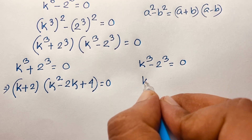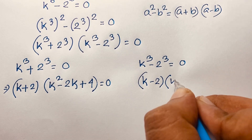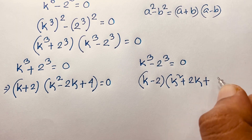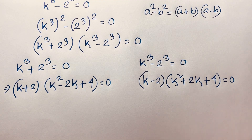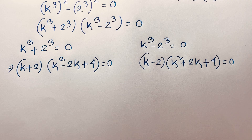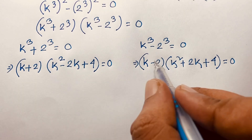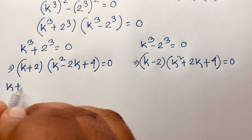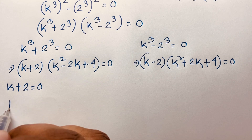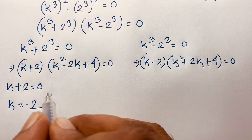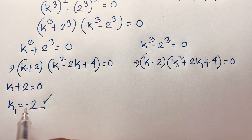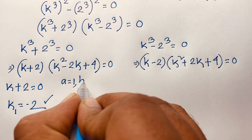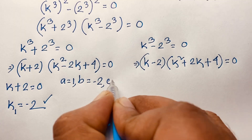And the second case: k to the power 3 minus 2 to the power 3 equals 0, giving (k − 2)(k squared plus 2k plus 4) = 0. So we have 4 sub-cases. From k plus 2 equals 0, k is equal to minus 2 — this is our first answer. For the quadratic k squared minus 2k plus 4, the coefficients are a equals 1, b equals negative 2, and c equals 4.